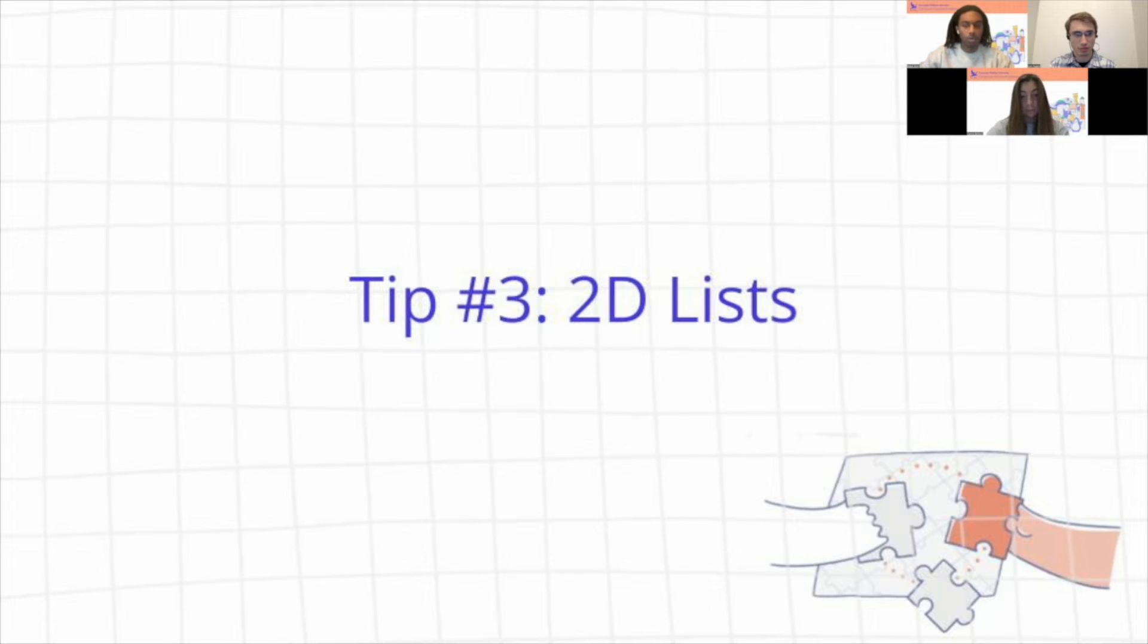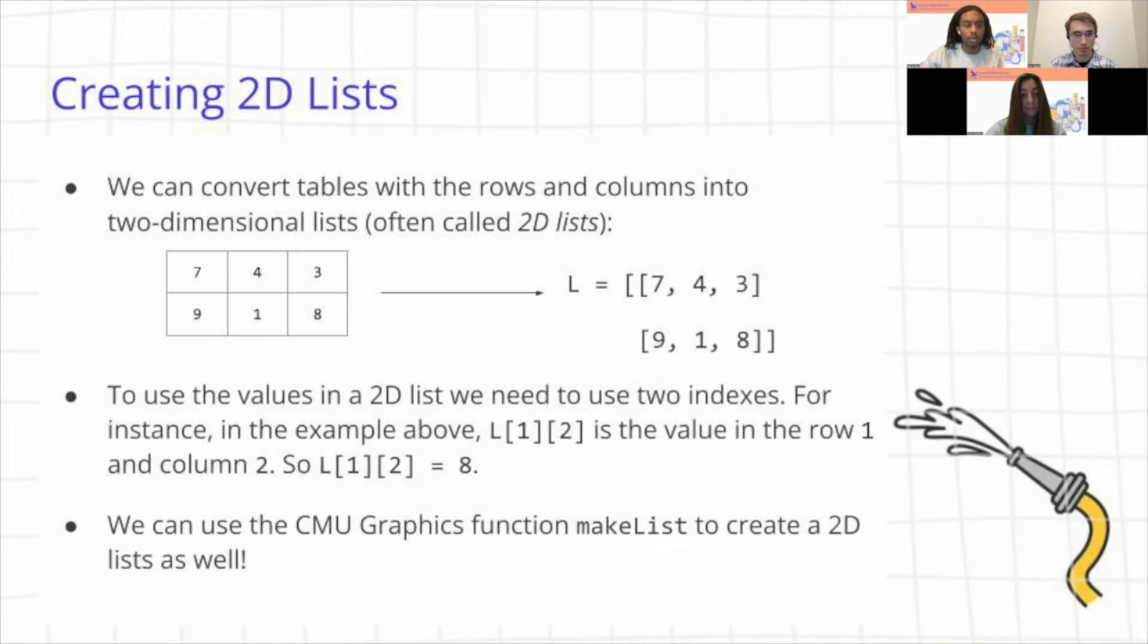Alright, moving on, we're going to be focusing on 2D lists for our next step. So one thing we can do is that we can convert tables with rows and columns into two dimensional lists that we can use in various ways and various applications. So often they're called 2D lists. And in the example here, we have a table with three columns and two rows. We can see that we can represent the same table, but in list form with our example list L. And essentially to use the values in a 2D list, we need to use two indexes. And if you can recall, when we have a list and we want to use a value, we actually only needed to use one index in the past for a 1D list or a one dimensional list, which is the examples we've been looking at so far.